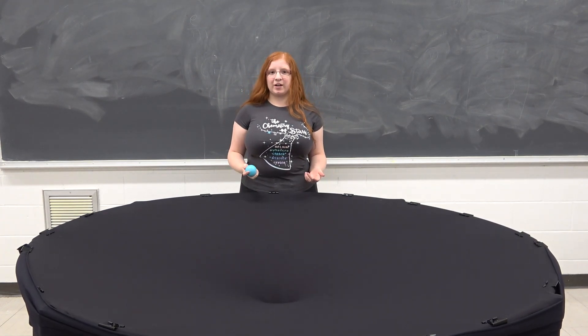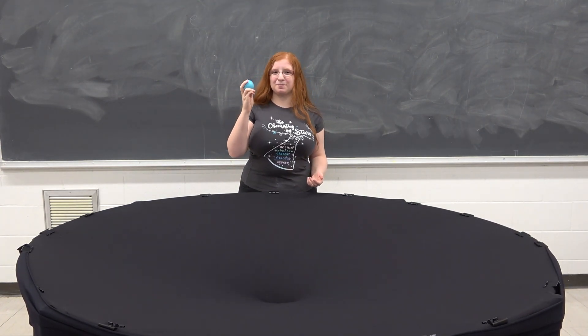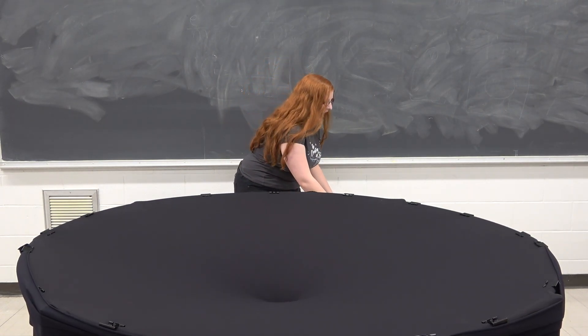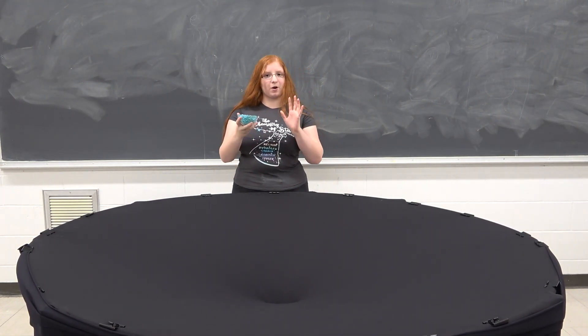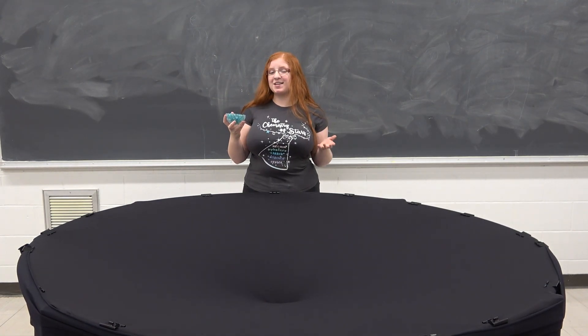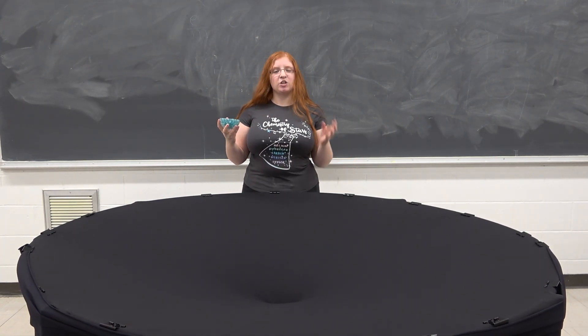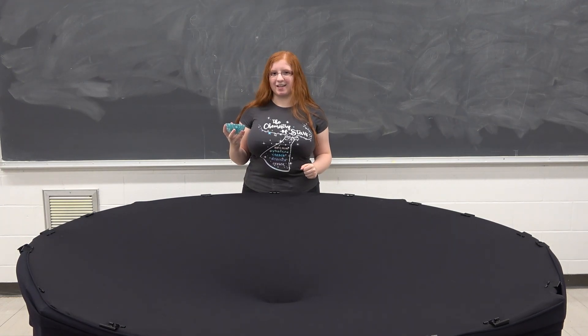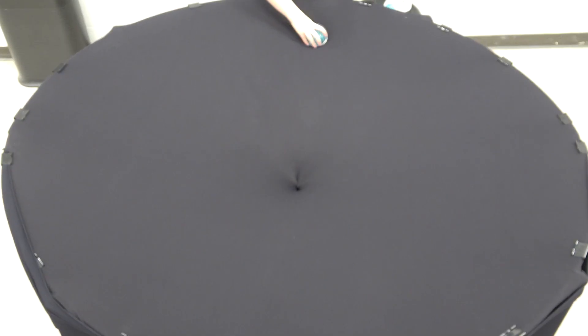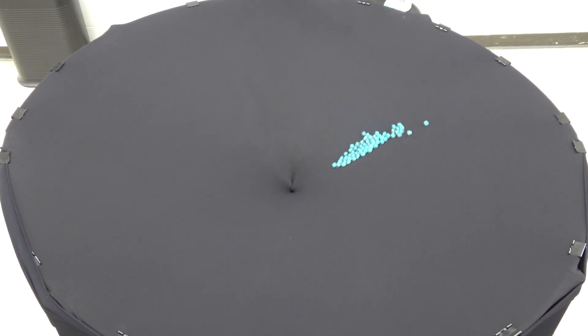Also, since it's a star getting ripped apart, we can't really use this ball here. So instead, I have a half-bowl filled with marbles or particles that will act as our star. This is actually a demo that I personally created to demonstrate what a TDE looks like. And if I toss the star across time and space like this, you can start to see it get ripped apart by the black hole.